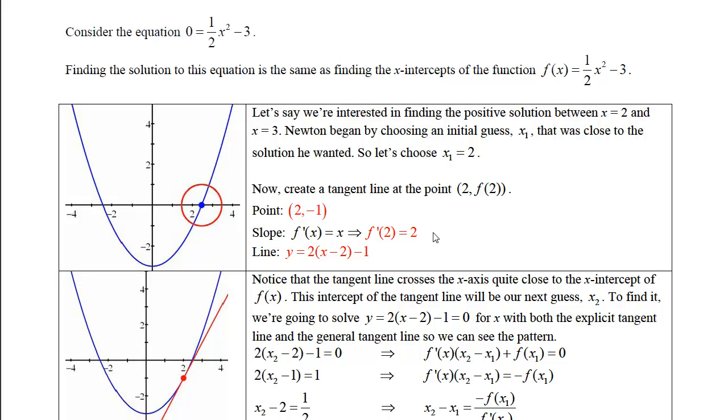Once we have the point and the slope, we can write the equation of the line, y equals 2 times x minus 2 minus 1. Now notice that this tangent line crosses the x-axis quite close to the x-intercept of f(x). This intercept of the tangent line will be our next guess, x sub 2. To find it, we're going to solve this equation equals 0 for x with both the explicit tangent line and the general tangent line so that we can start to see the pattern.